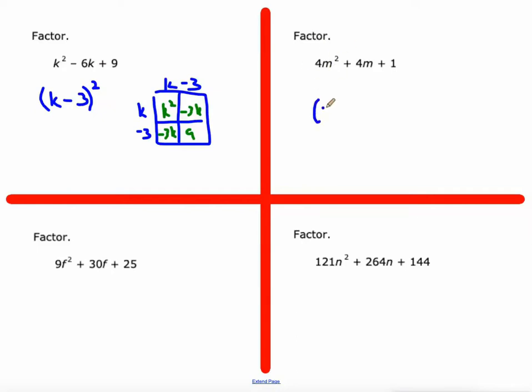This one begins with a perfect square. The square root of 4m squared is 2m. Ends with a perfect square. The square root of 1 is 1. And in the middle, if we multiply 2m times 1, we get 2m. Double it, you get 4m. That rule has got to be true, too. So that is the factorization of that one.